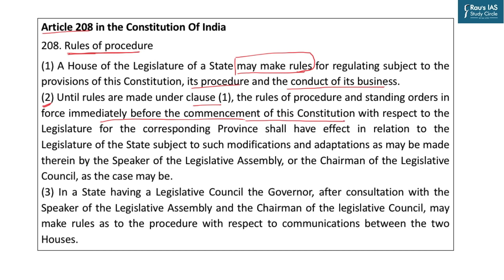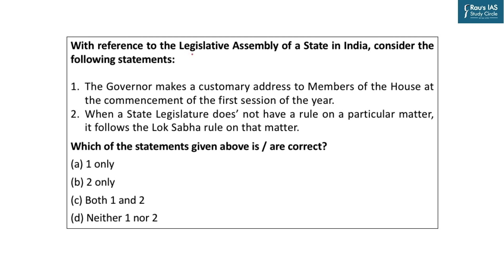Clause 2 of Article 208 says that until rules are made under Clause 1, the rules of procedure and standing orders in force before the commencement of the Constitution with respect to the legislature of the corresponding province shall have effect. This relates to a 2019 UPSC Prelims question about whether a state legislature, when it has no rule on a particular matter, follows the Lok Sabha rule. As this present case shows, that is not a convention — state legislatures are not required to follow Lok Sabha rules. Their rules can vary, but must remain within constitutional provisions and conform to the principles of natural justice.